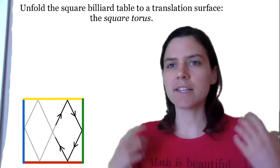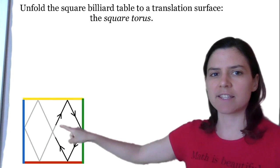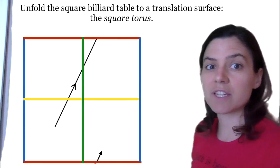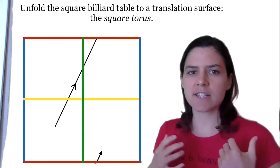The key tool we use is that if we have a billiard bouncing around in a square, we unfold it across its edges to turn a billiard into a translation surface. The translation surface we get is a torus where the billiard trajectory just goes straight. We have a lot of machinery to work with translation surfaces, so this works out much better.